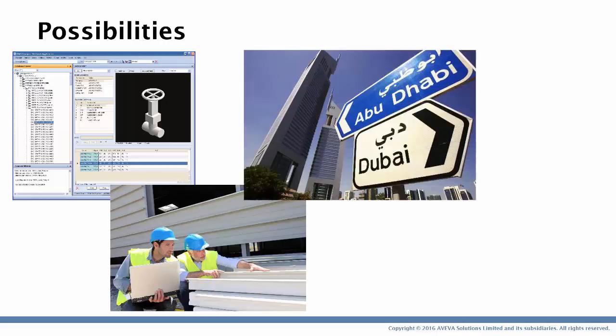Two rather more extreme examples: we have a customer that wants to use a solution for managing the lifecycle of their street furniture — their signs, their traffic lights for example. They weren't necessarily driven by the table interface, but the background database, the Davicon system, and the use of global gives them a really powerful solution for sharing and communicating information around their business.